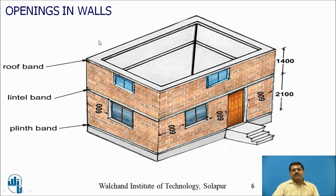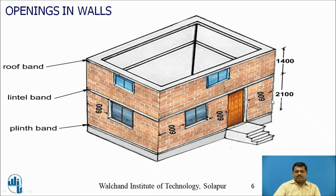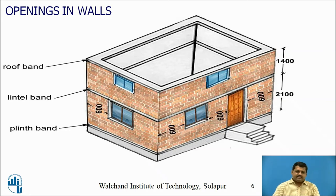Most importantly, the openings in the walls must be positioned correctly. The window opening must have a minimum distance of 600 mm from the corner. The distance between two openings — door and window — must also be at least 600 mm. The door opening must be at least 600 mm from the corner of the building, which is approximately two feet.